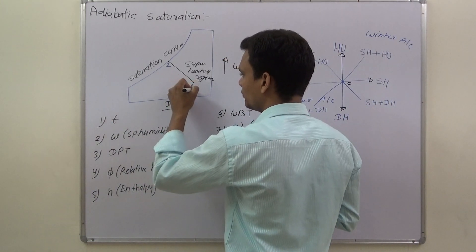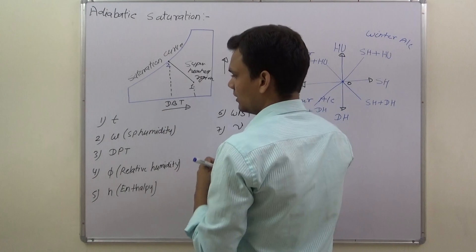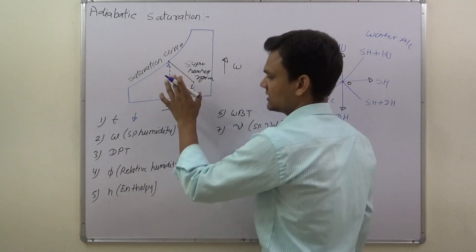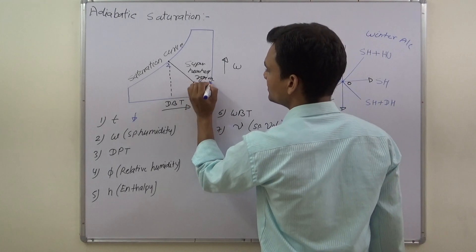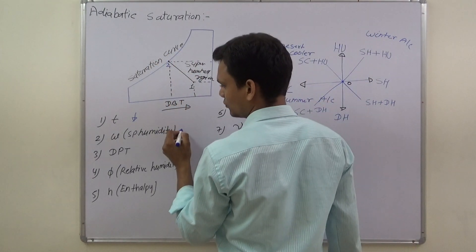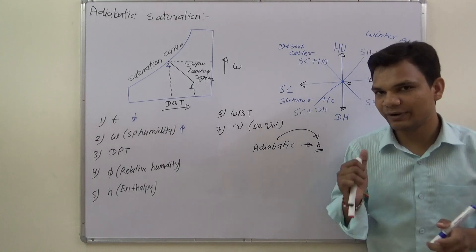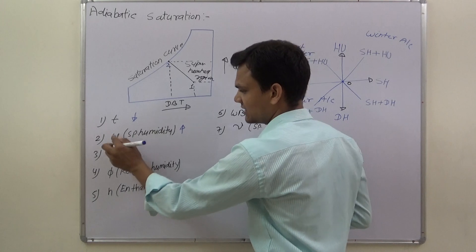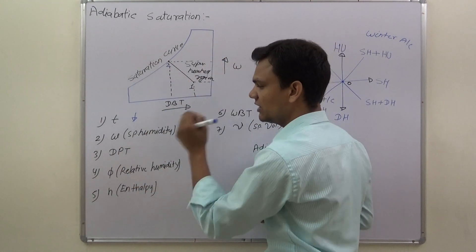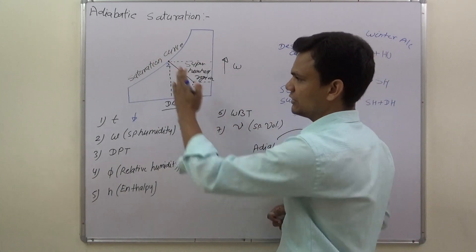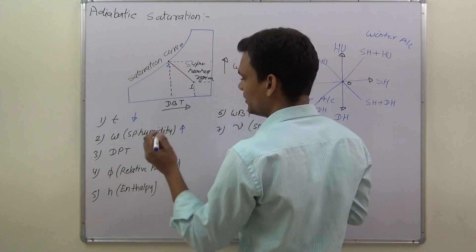So if we go from point 1 to point 2 during adiabatic saturation, the dry bulb temperature will decrease. On the psychrometric chart, specific humidity will increase because humidity lines are horizontal. Dew point temperature lines are also horizontal but are non-uniformly spaced, whereas specific humidity lines are uniformly spaced. The direction of dew point temperature lines is away from the saturation curve, while specific humidity lines move towards the saturation curve. So dew point temperature will also increase.